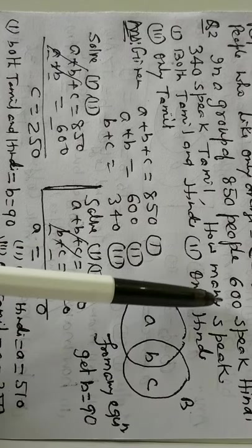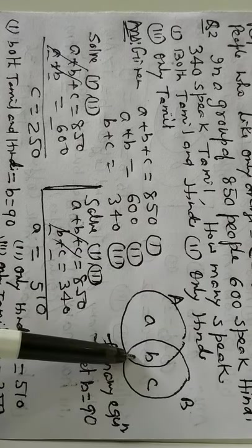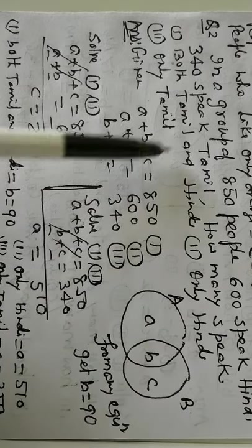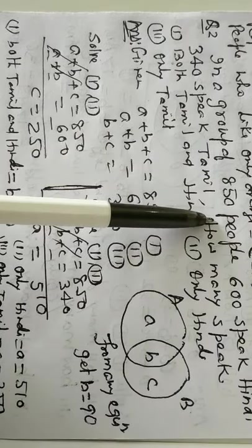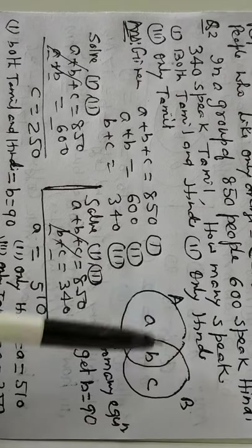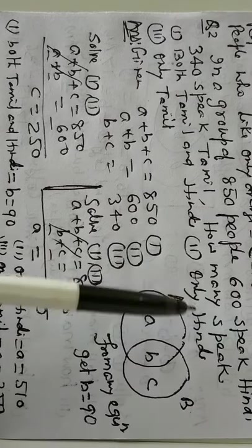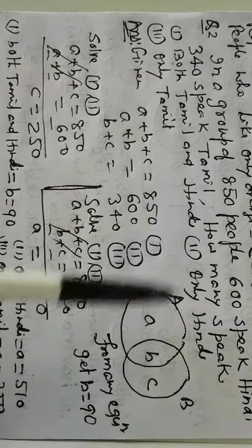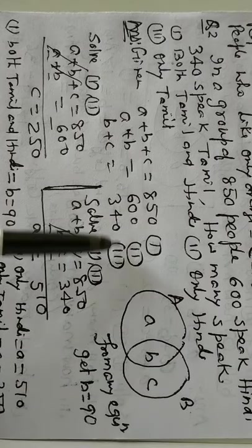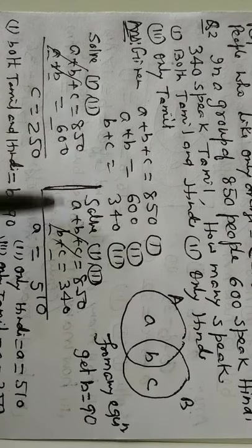600 people, Hindi. So A plus B is 600. And in a group of 850 people, total people is A plus B plus C, 850. Again, 340 like Tamil. So B plus C is 340. Solving in this way.